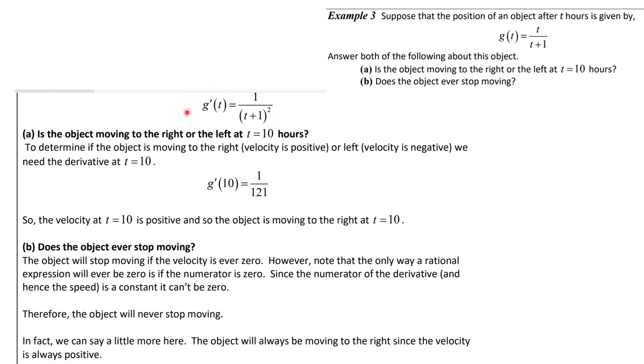From the previous section we knew, or you could have computed again, g prime of t is 1 over t plus 1 whole squared. So what we're going to do is we're just going to substitute 10 in there and we get 1 over 121. Now this is a positive number. That means that the velocity is positive, so the object is moving to the right at t equal 10. Does the object ever stop moving? Is this derivative ever 0? And the answer is no, because the numerator is 1. It's never going to be 0. So the object will never stop moving.